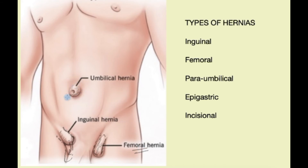We also get hernias around the belly button. These are fairly common in babies and infants and tend to correct themselves in that age group. In adults they are called paraumbilical hernias, occurring around the umbilicus — the site of weakness.